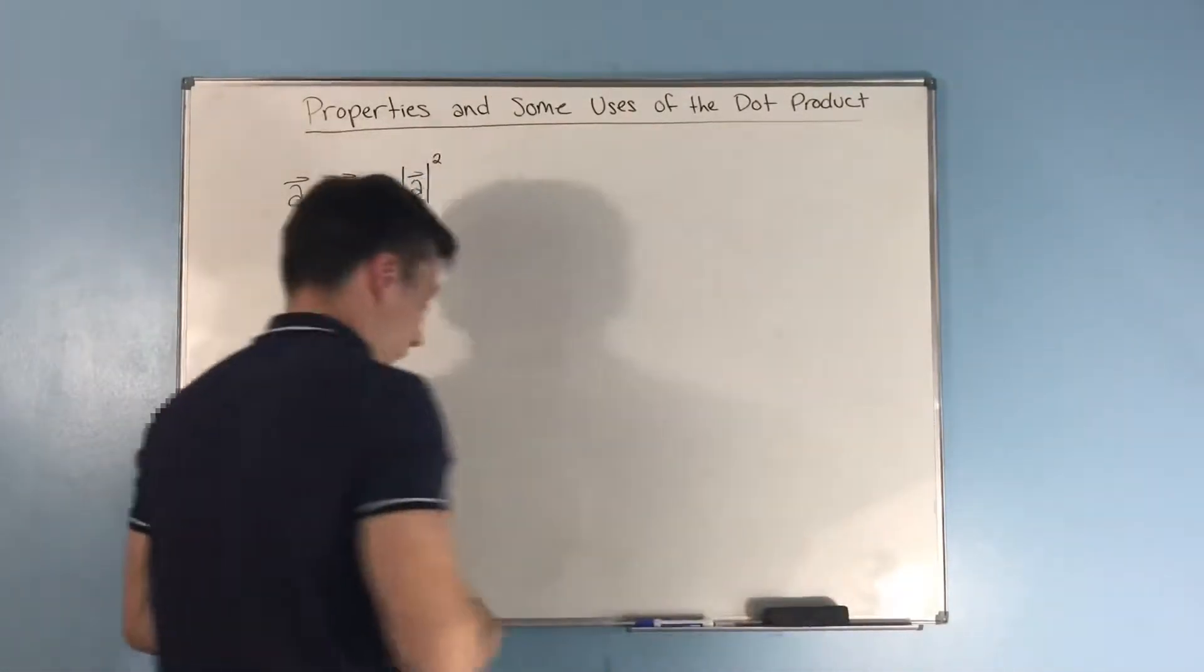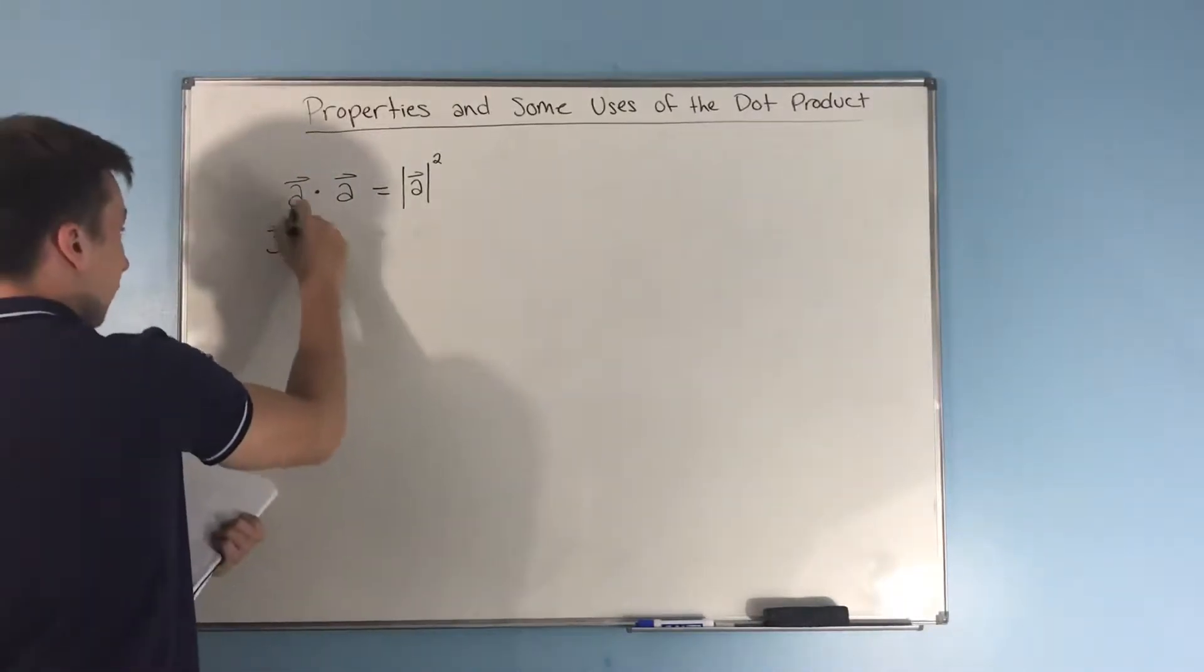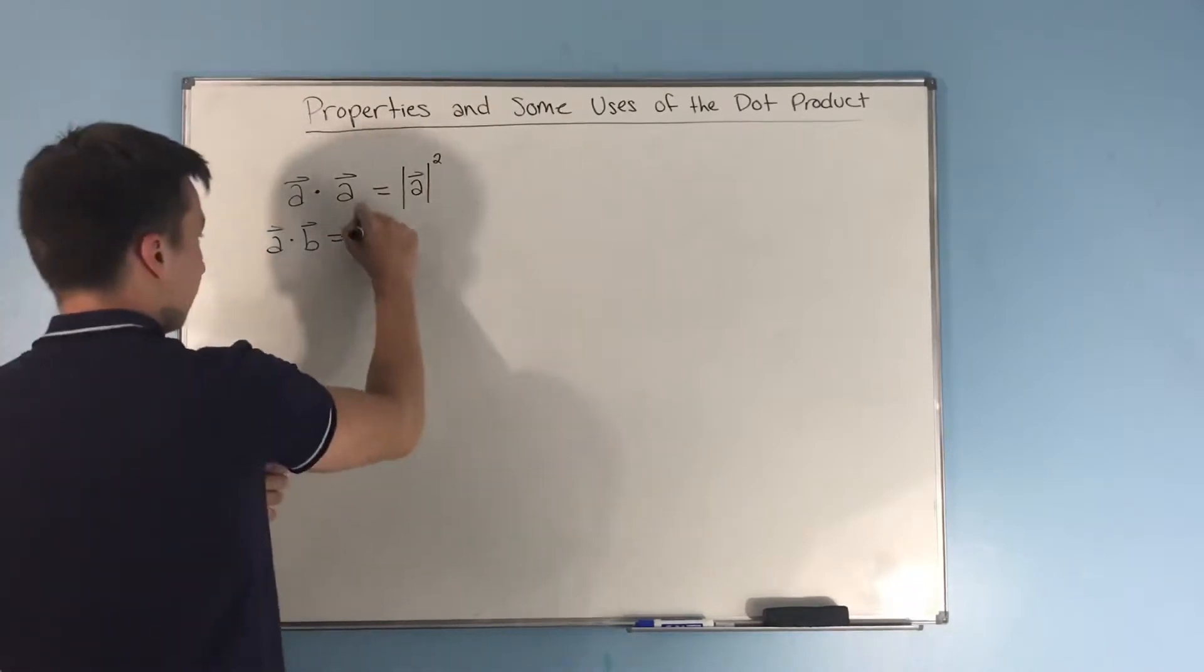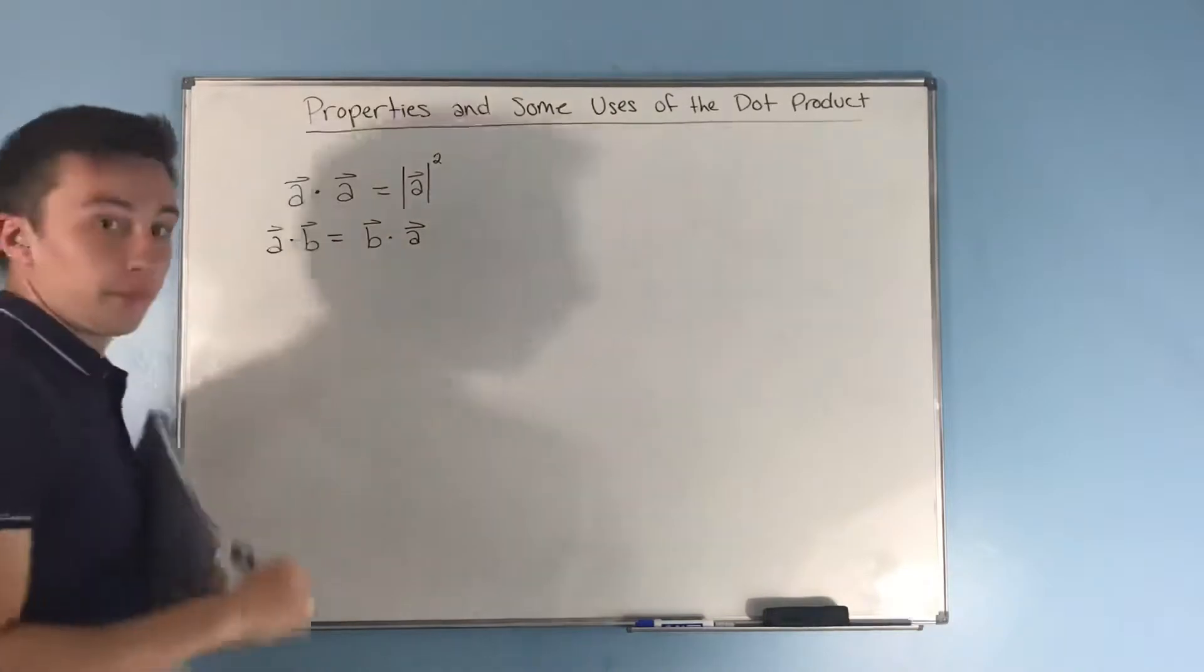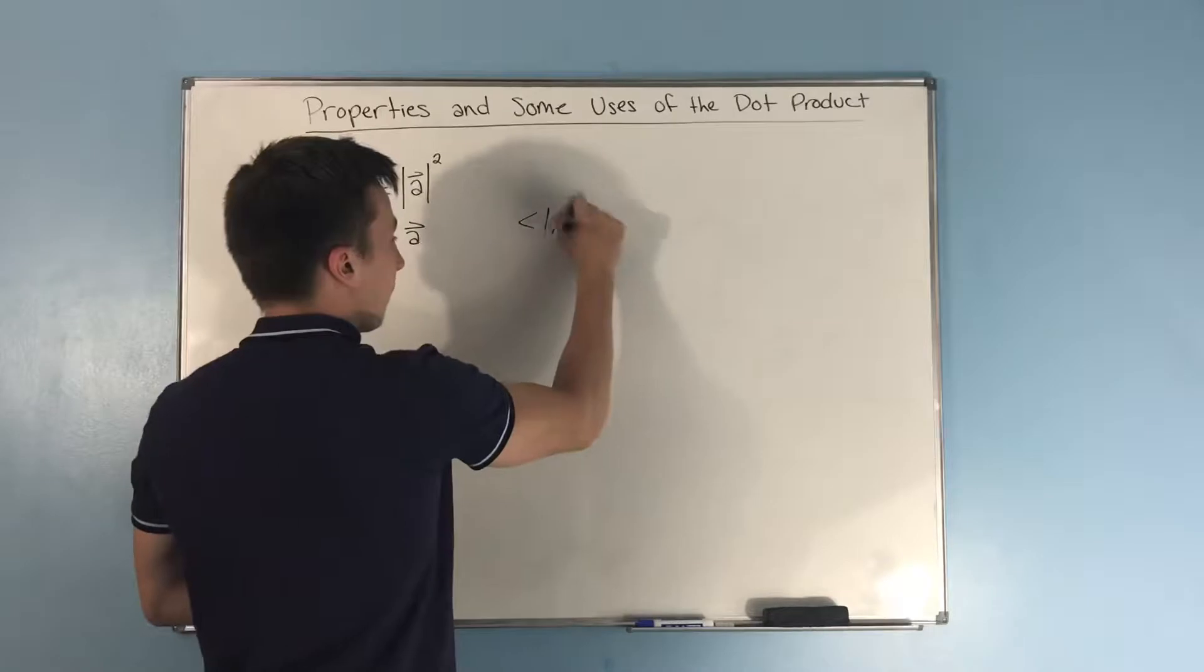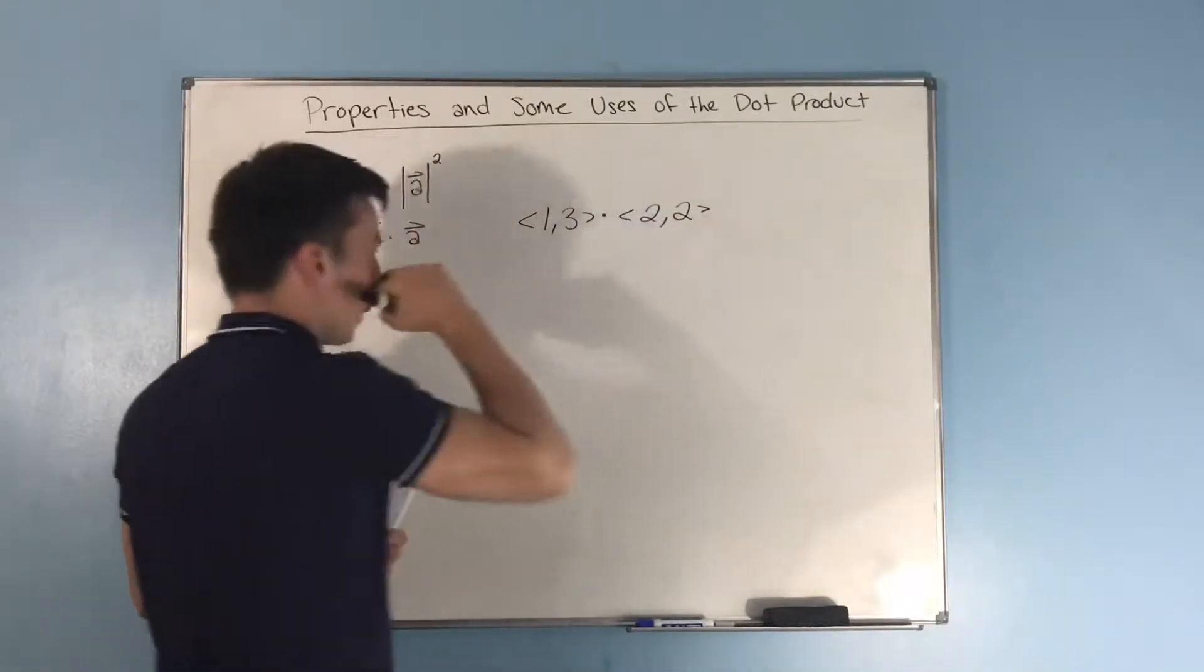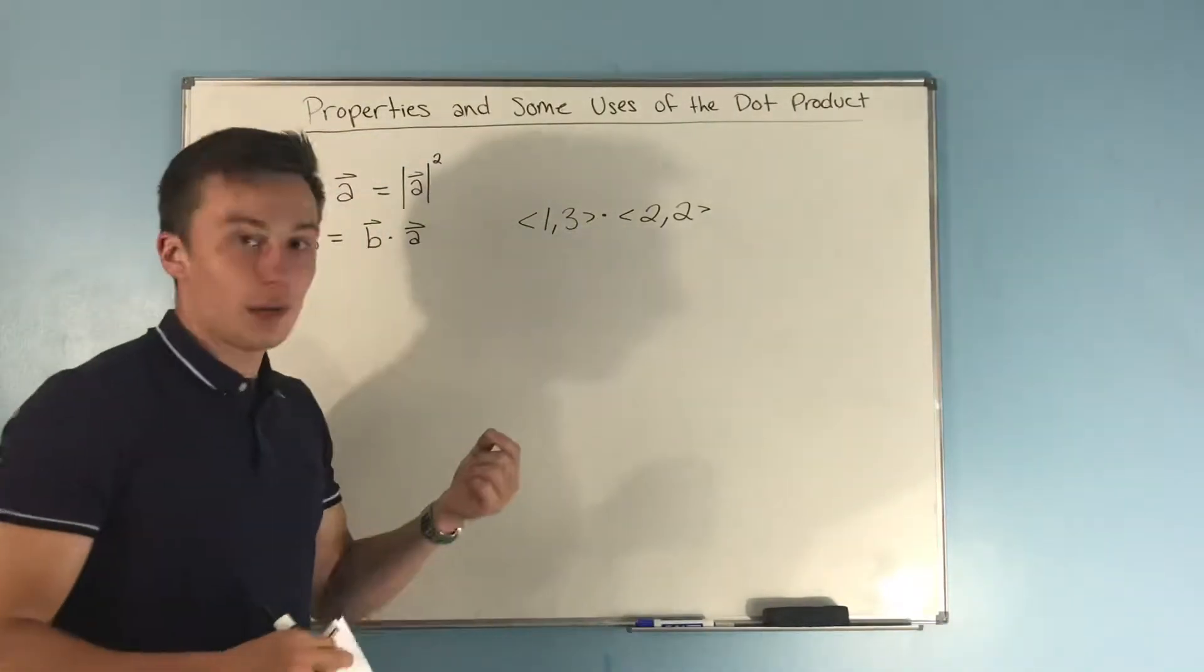Next, we have that a dot b is the same exact thing as if you were to do b dot a. It's the same exact thing. Now remember, if you have like 1 comma 3 dot 2 comma 2 or something like that, it doesn't matter if it's 2 comma 2 dot 1 comma 3.